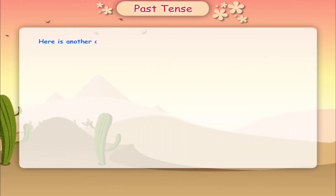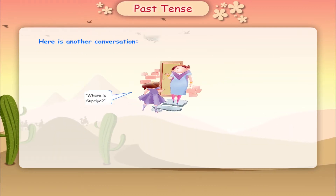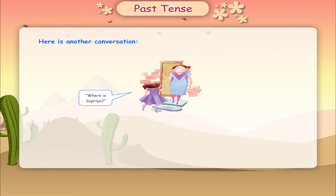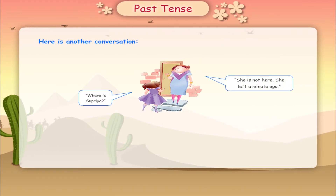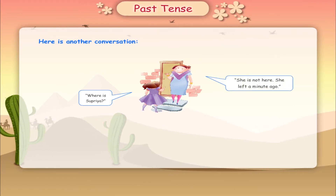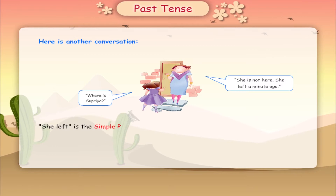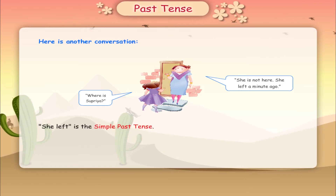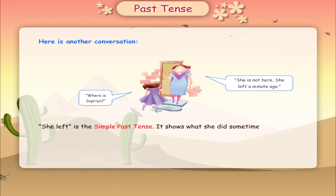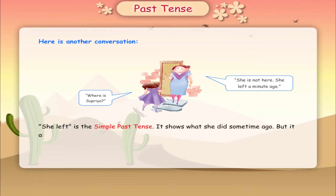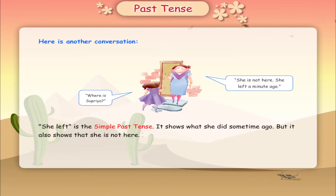Here is another conversation. Where is Supriya? She is not here. She left a minute ago. She left is the simple past tense. It shows what she did some time ago, but it also shows that she is not here.